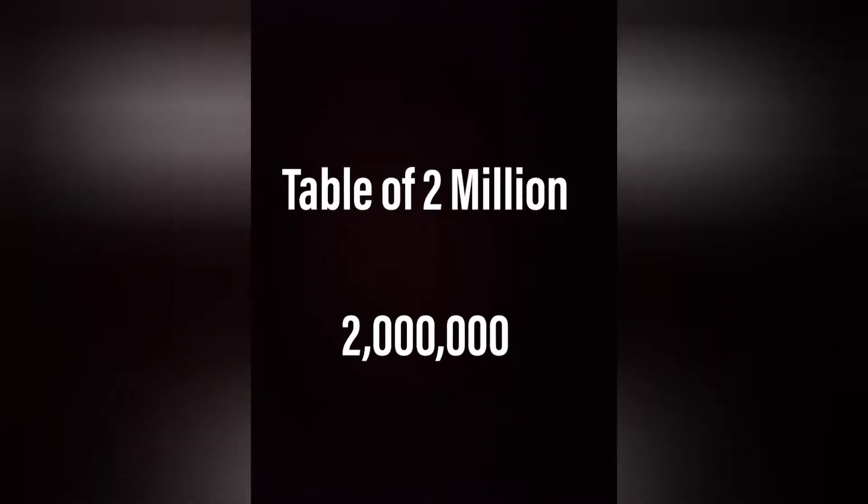Let's learn a table of two millions. One times two millions is two millions. Two times two millions is four millions. Three times two millions is six millions.